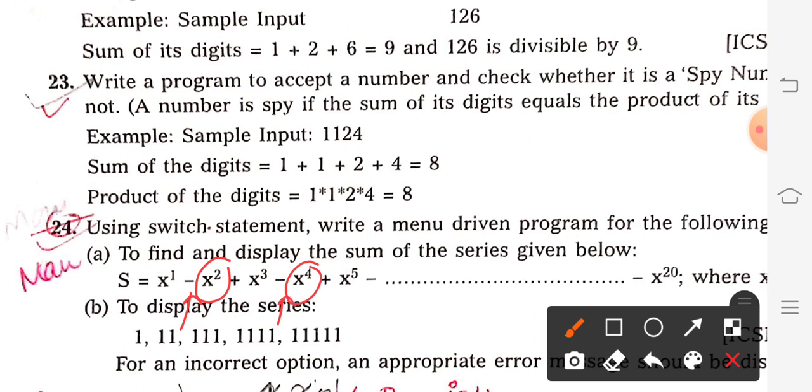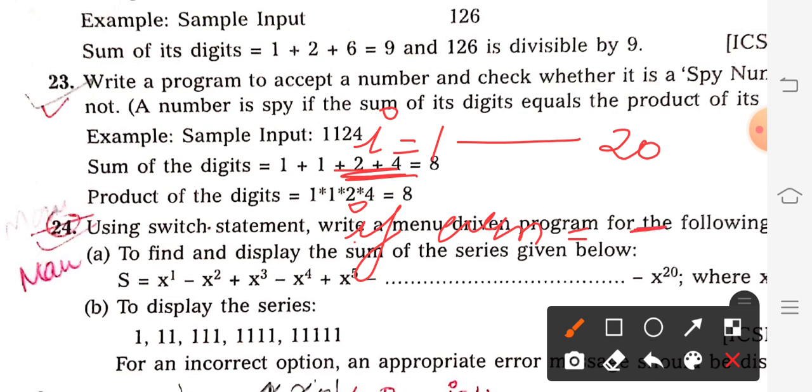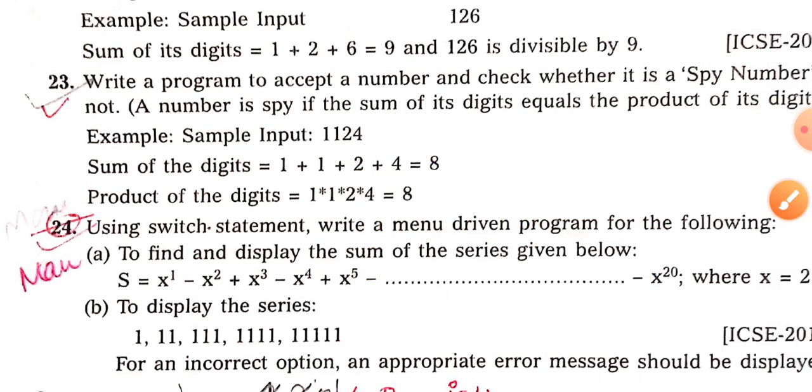It means I have to check whether the power - which actually goes in i, starting from 1 up to 20 - I have to check whether this i is even or odd. If i is even then we will use minus sign, and if i is odd then we will use plus sign. Clear? That's it.